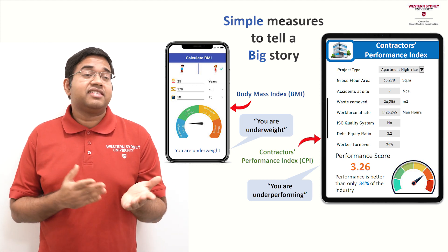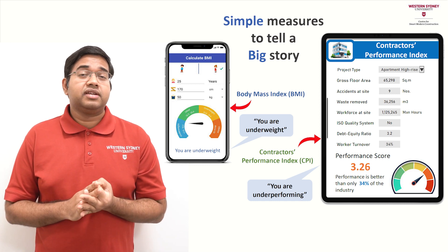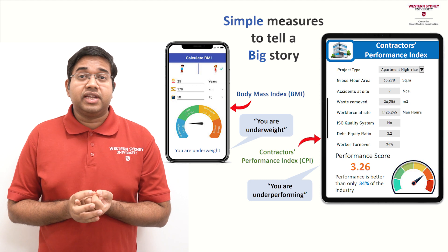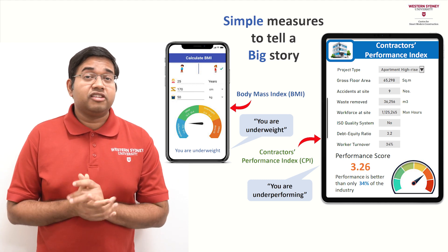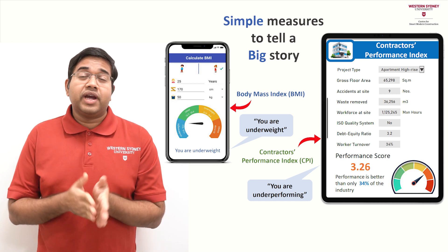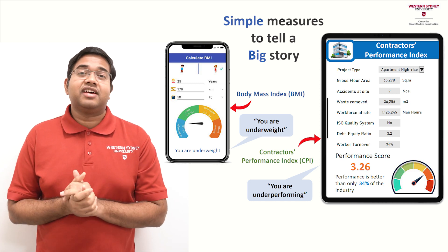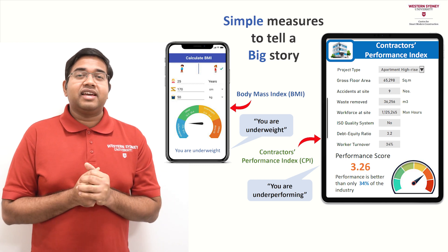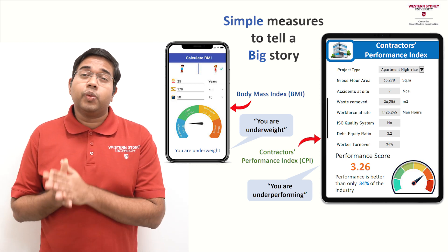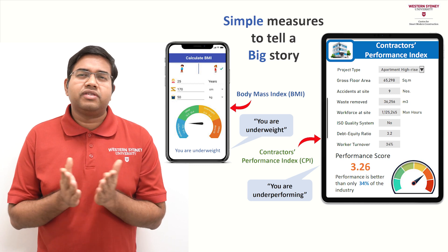Measures like the accidents at site, the volume of waste removed, the worker turnover, and the labor productivity — these were used to create this model. It provides a score and indicates where the contractor ranks compared to the rest of the industry. This index is capable of evaluating the contractor's overall level of performance based on a set of simple measures.